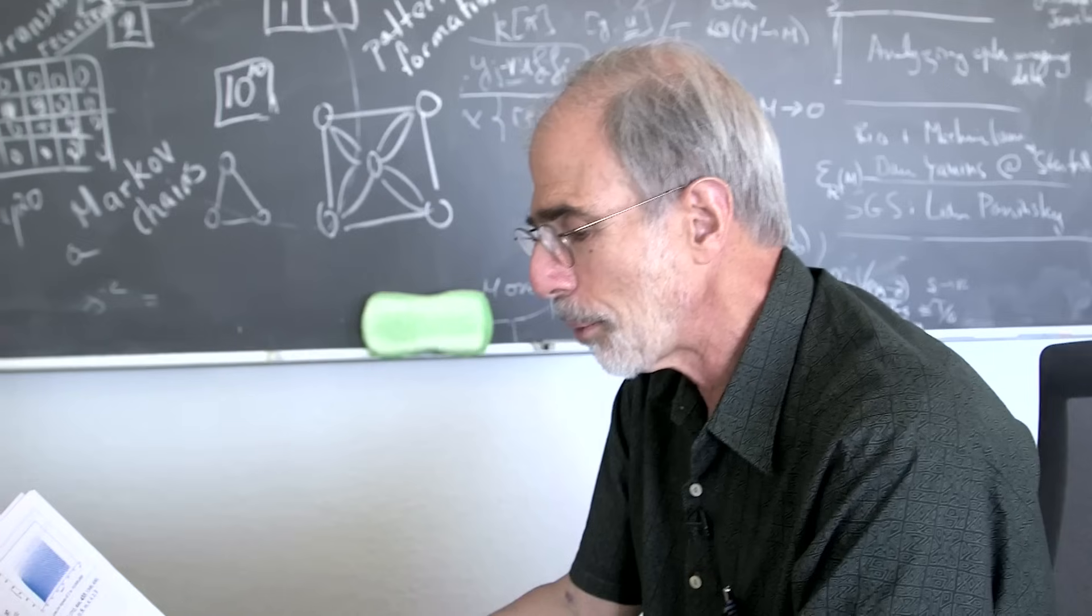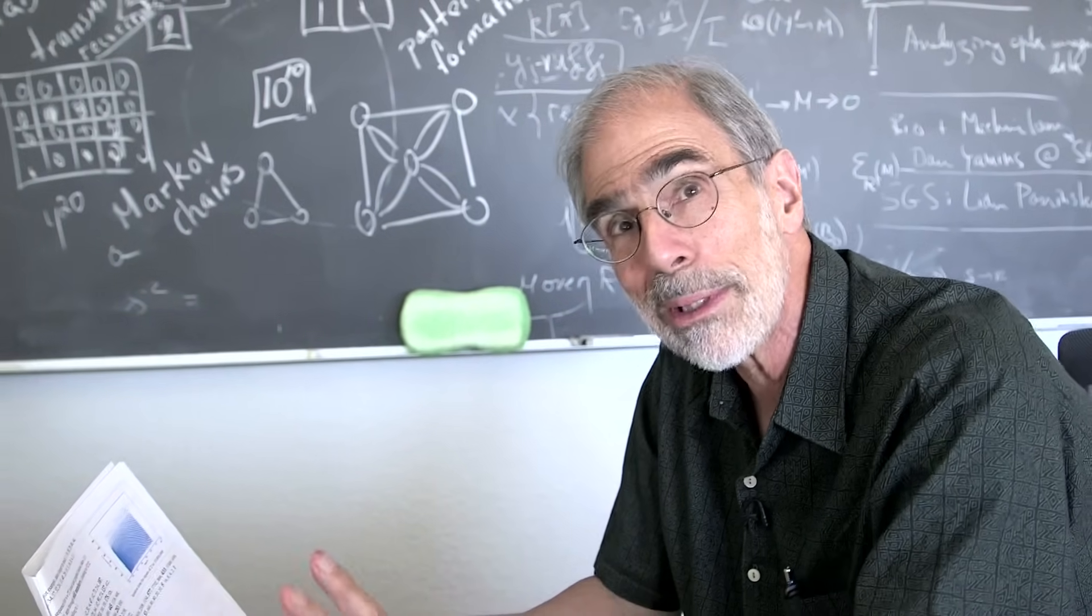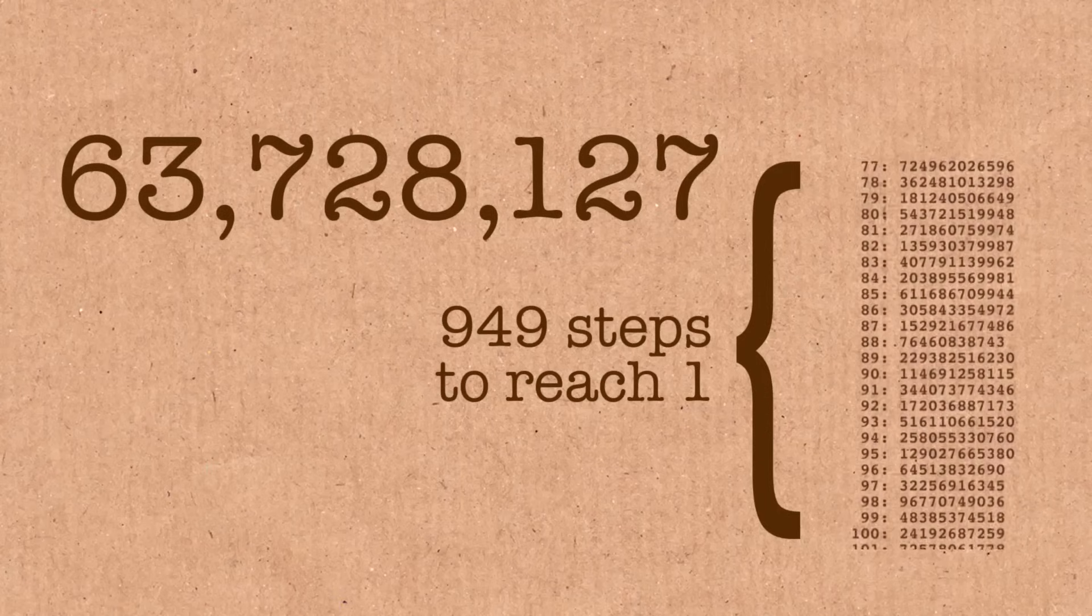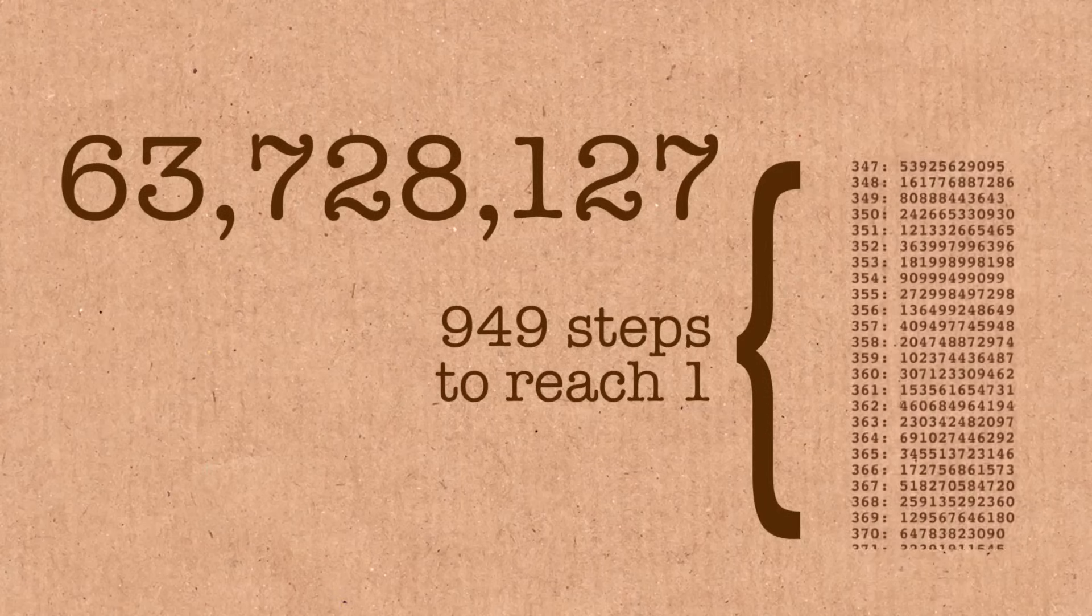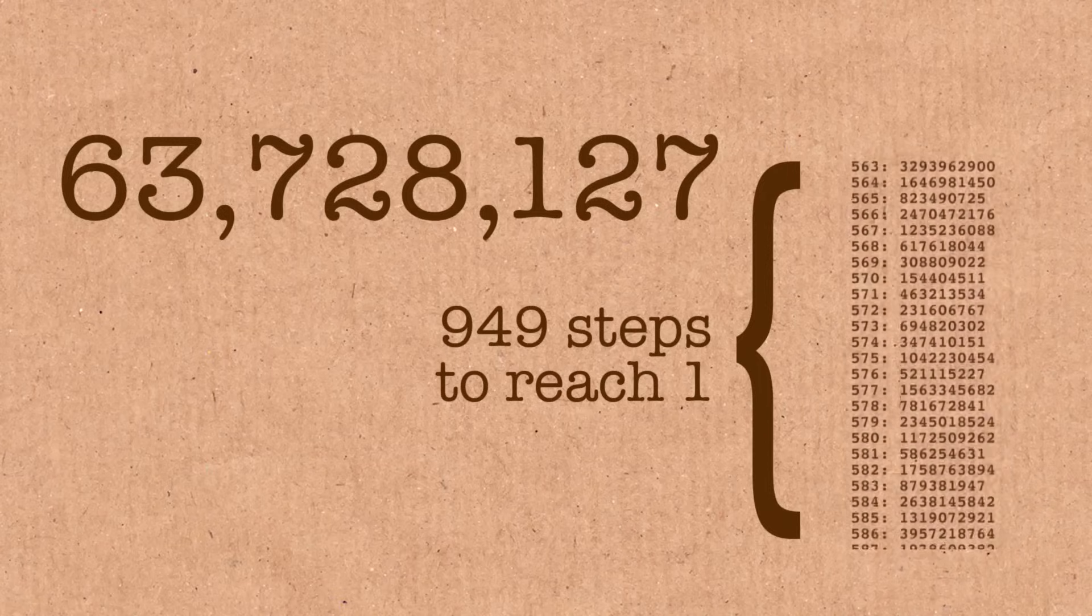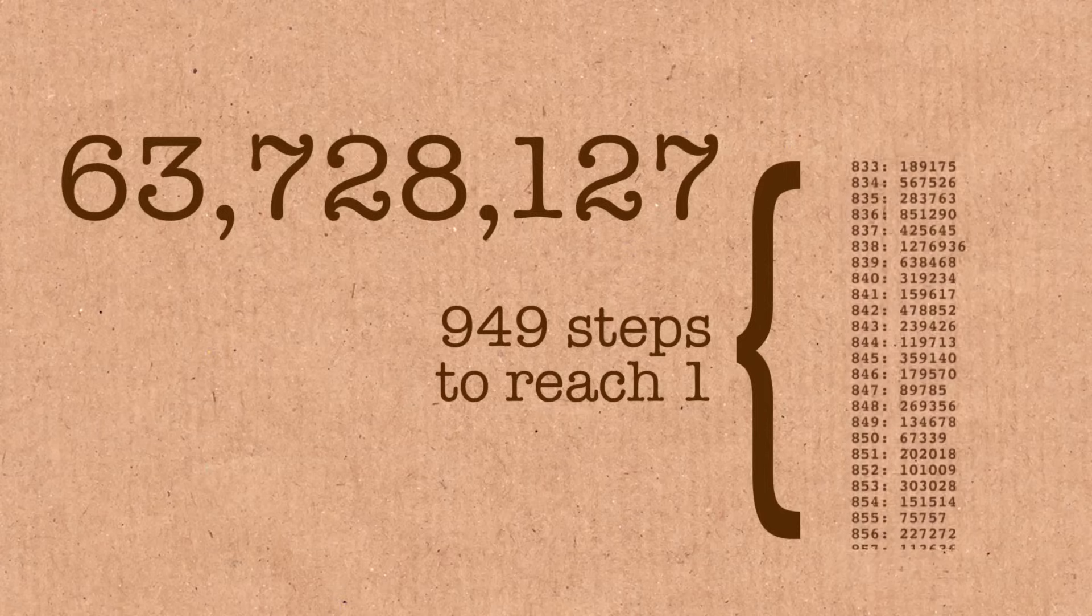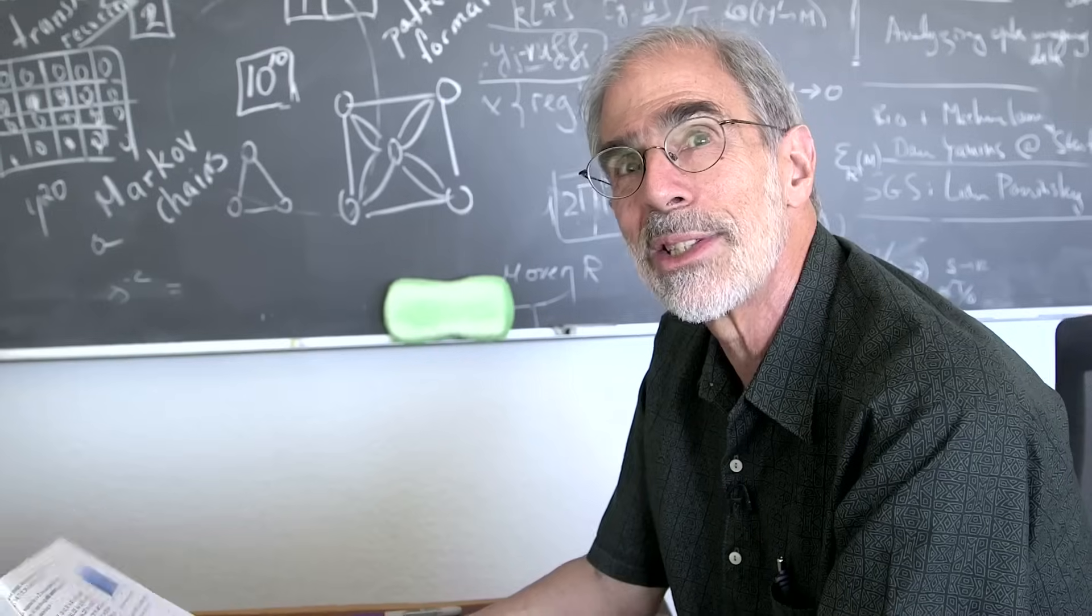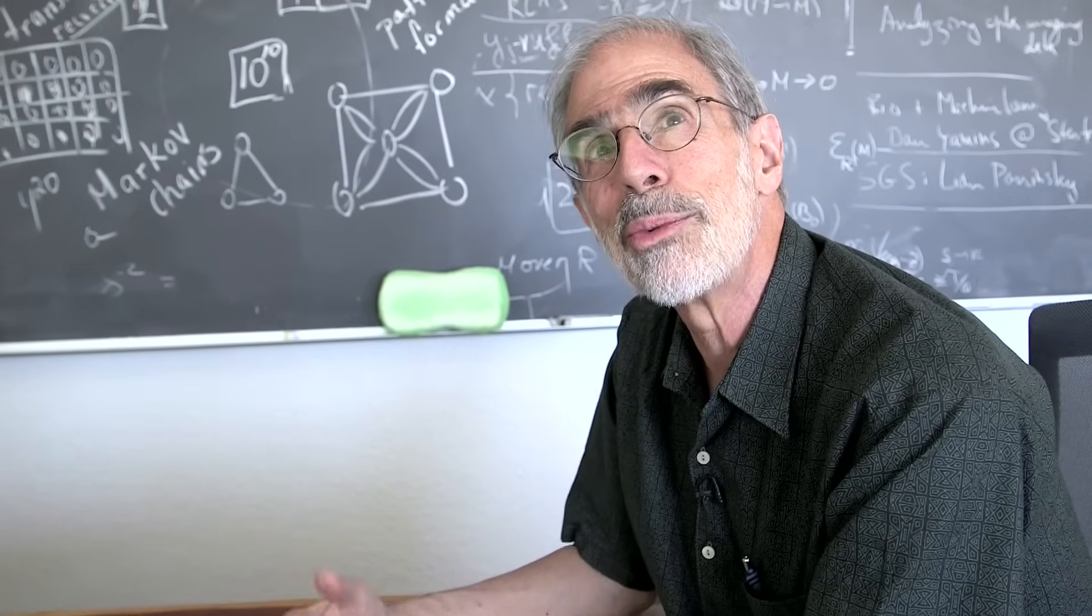You'll also find a table of the numbers that hold the record for the longest time to get to 1. Let's get a couple of examples here, there are some wonderful ones. For instance, the record holder for the number under 100 million, people know all these things, is 63,728,127. And that takes 949 steps to get to 1. I bet the person who found it thought maybe he was onto something, maybe he finally had a counterexample. But no.